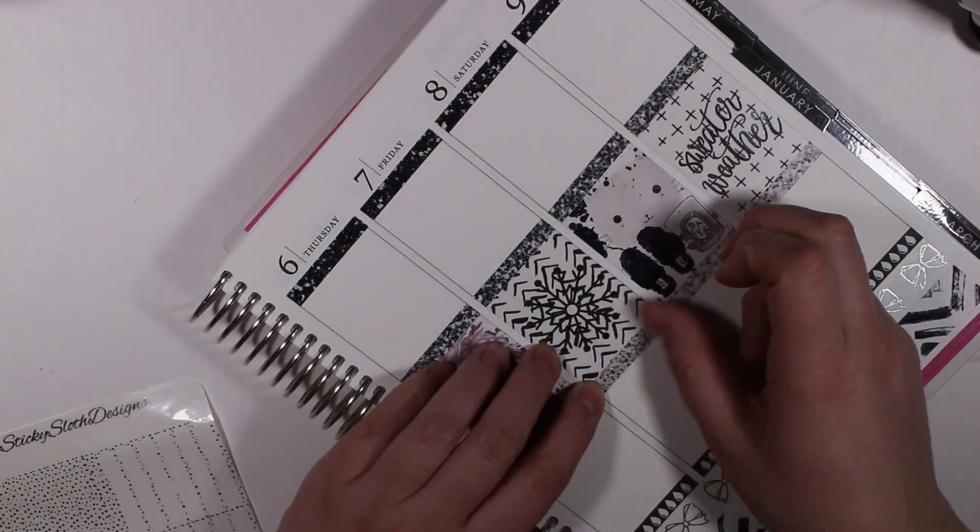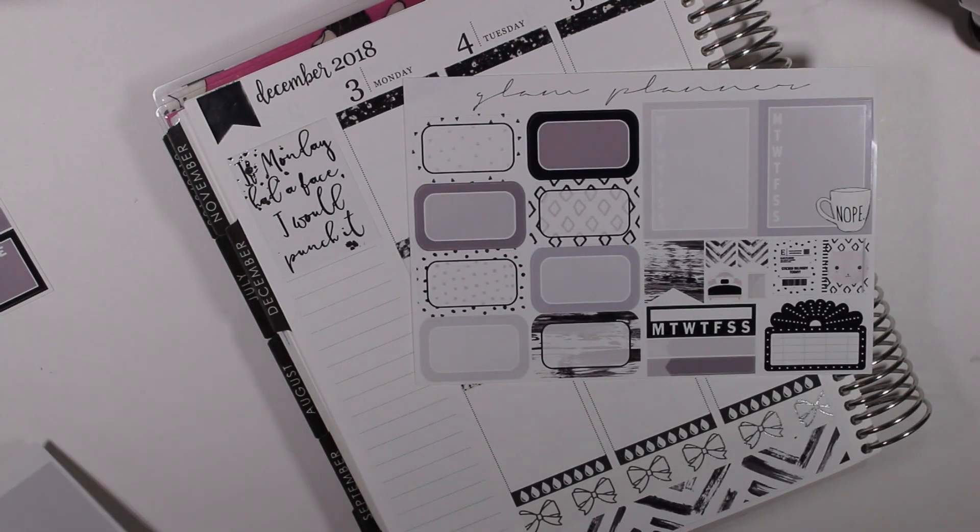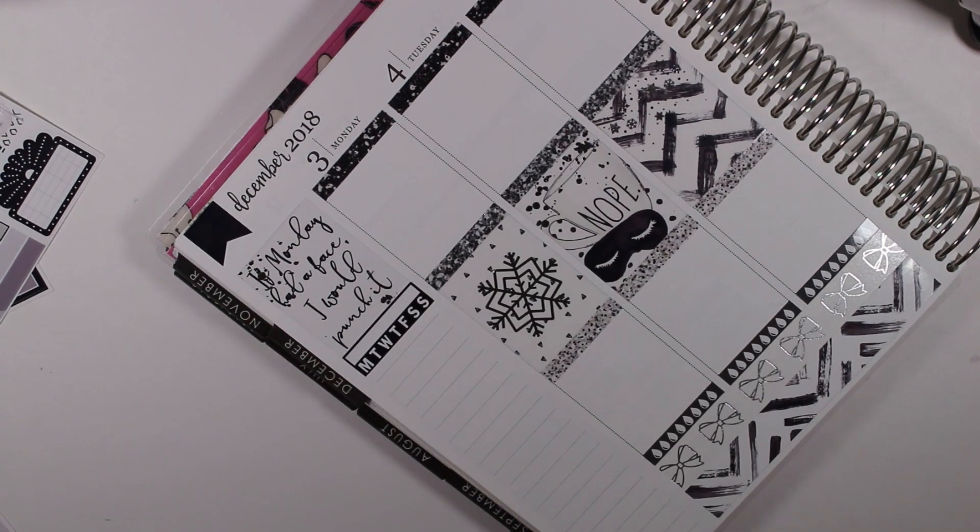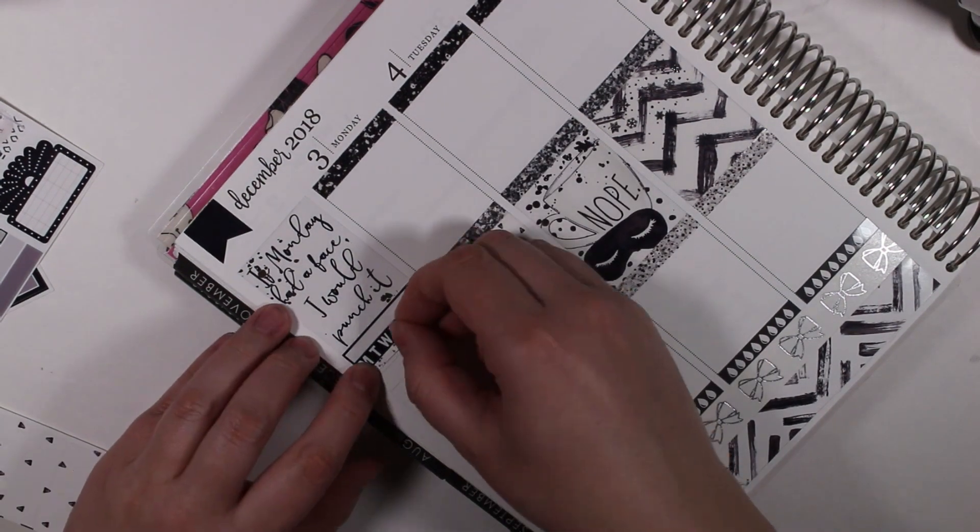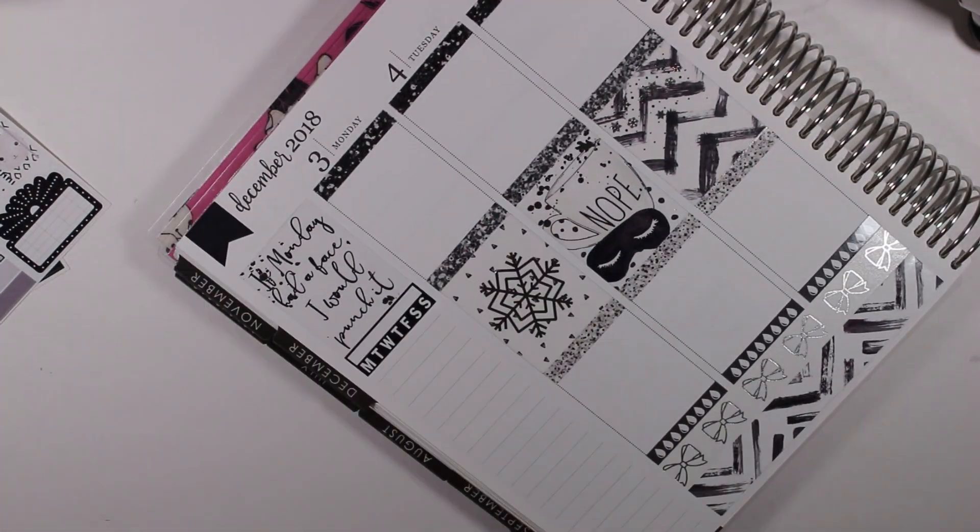The only thing that drives me a little bit nuts is that on every sheet if you use three a day every day in your planner like I do, you end up with like five at the end of the sheet which just kind of bothers me that it's not seven.